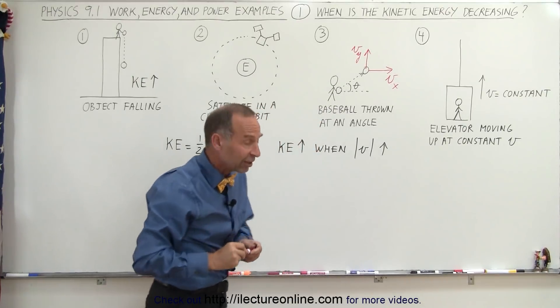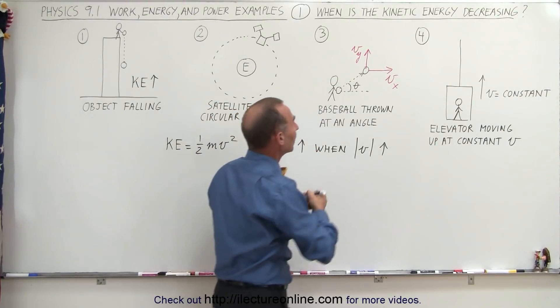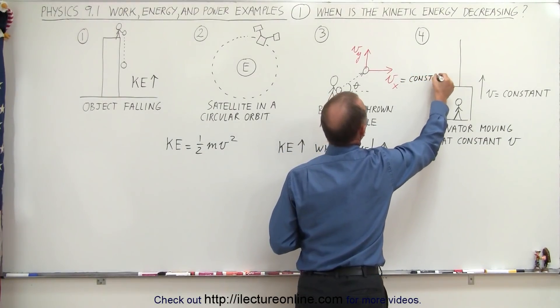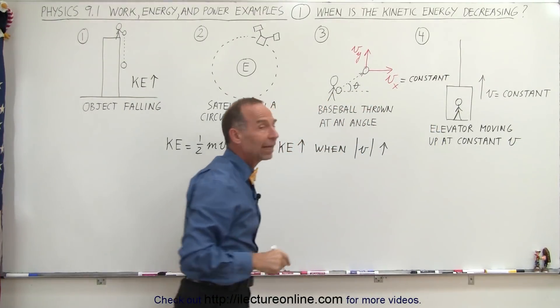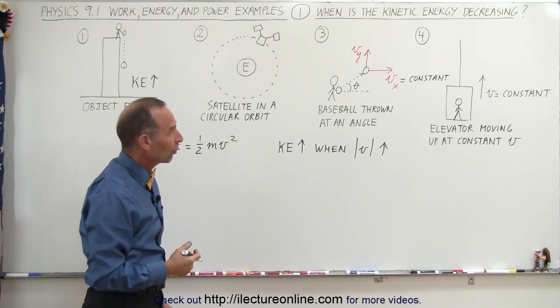Now we know that for projectile motion, the velocity in the x direction doesn't change. So we know that this is going to be equal to constant. So the component in the x direction has no bearing on the kinetic energy, or at least a change in the kinetic energy. So since v_x is always constant.